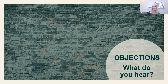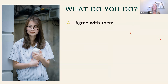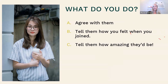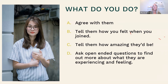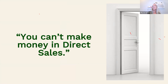As you're hearing these obstacles, what do you do? Do you agree with them? Do you kind of play it off? Do you tell them how you felt when you first joined? Do you tell them how amazing they'd be? Or do you ask open-ended questions to find out more about what they're experiencing and feeling? You could do a combination — but definitely not option A, agreeing with them. I'm pretty sure you could do every single one of those — but not A.